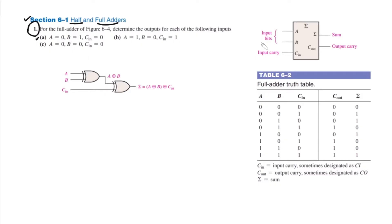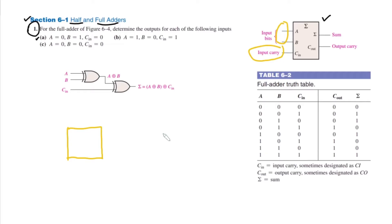What are A, B, and C? We have two inputs A and B, while the carry input C in is the carry which we can get from another full adder. This is what we have. To understand the usage, consider a 2-bit adder with adder 1 and adder 2 connected with each other.